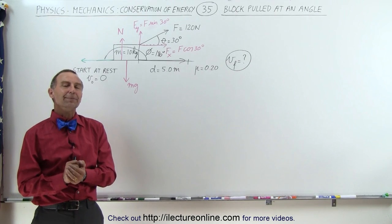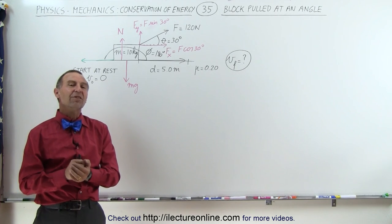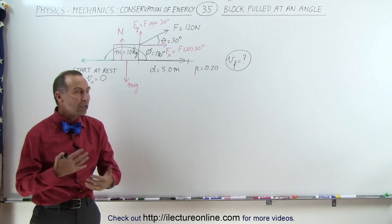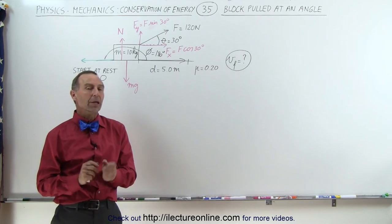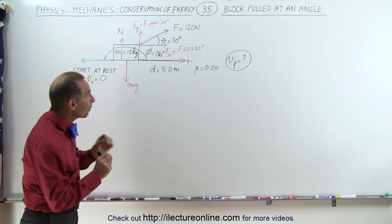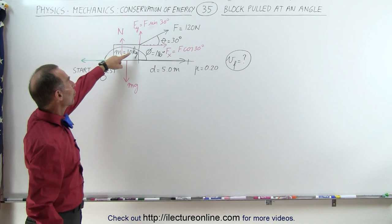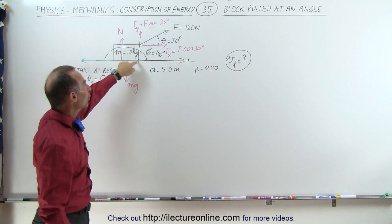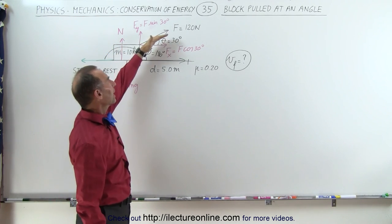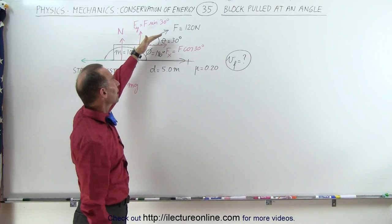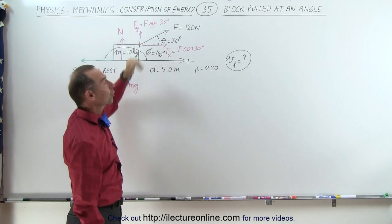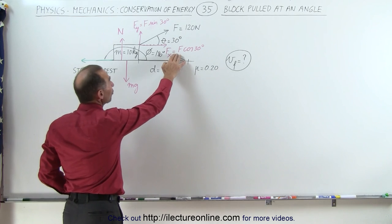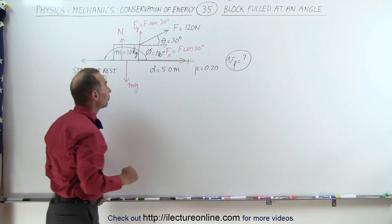Welcome to ElectronLine. In this example we have a work and energy conservation type of problem, but what's special about this problem is that the force by which the block on the surface is being pulled is working at an angle — 30 degrees relative to the horizontal — which means that it has a horizontal and a vertical component.